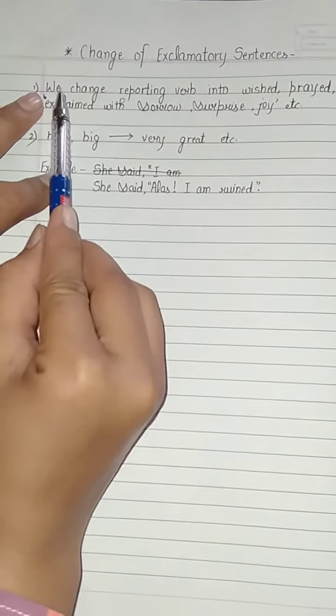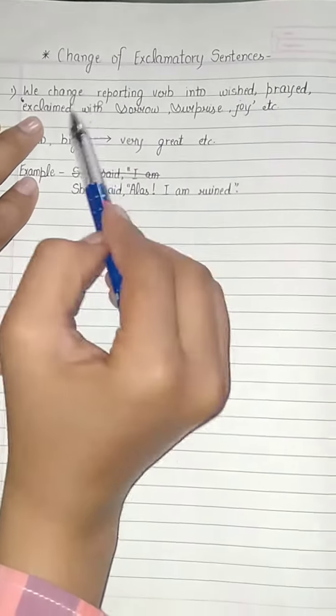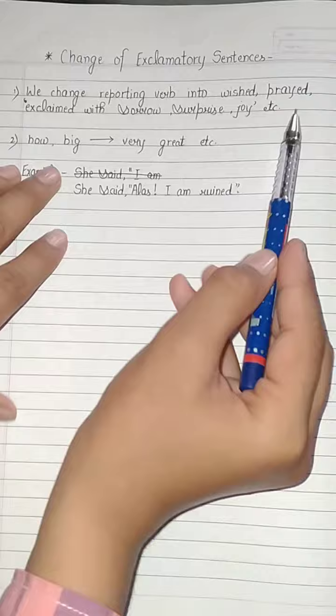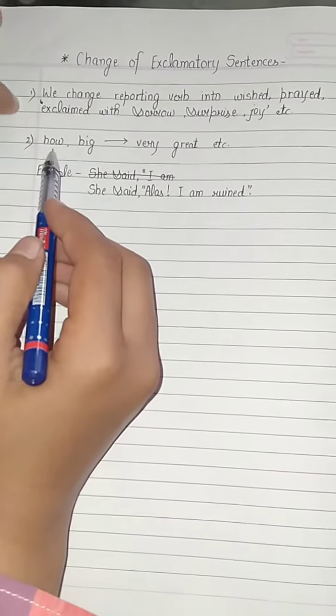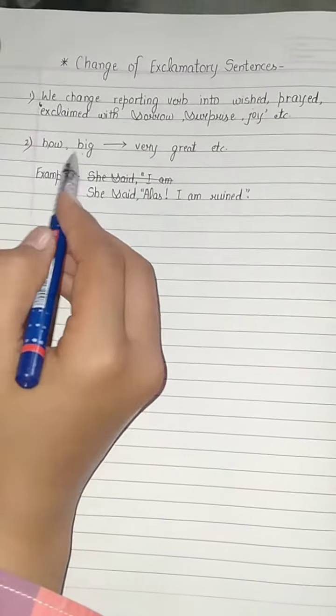As you can see, whenever we change the exclamatory sentence of direct into indirect, we have to follow these rules. We change the reporting verb into wished, prayed, exclaimed with sorrow, surprise, et cetera. And whenever the sentence is talking about how or big, we change it to very, great, et cetera.